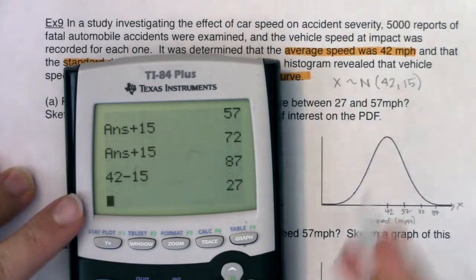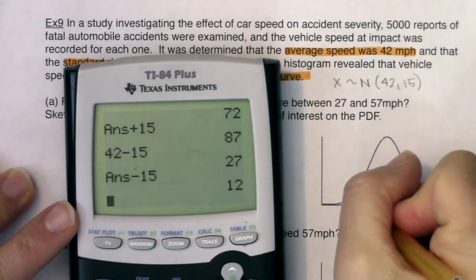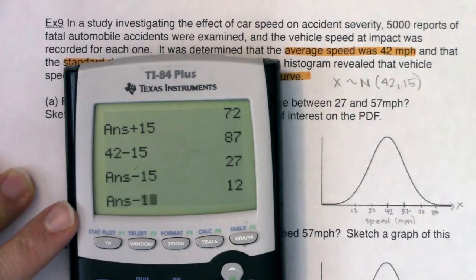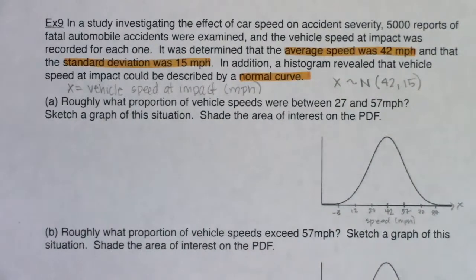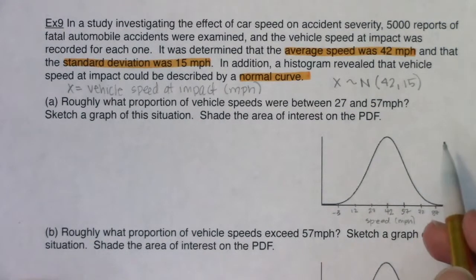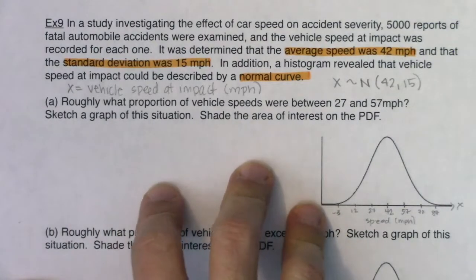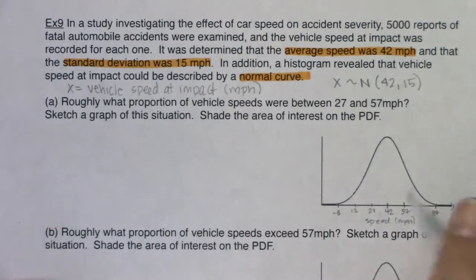Starting with 42, I add 15 to get 57 — that's about one deviation above the mean. Add another 15 and we're at 72. Add yet another 15 and we're at 87. Going the other way: 42 minus 15 gives us 27. Lose another 15 and we're down to 12. Lose another 15 and we're down to negative three. You can see there's no way for a vehicle speed to be negative three miles per hour — this is where theory runs into the real world. Theoretically this goes down to negative three, but in reality you don't have vehicle speeds of negative three, so we're just talking in theory with this bell curve.